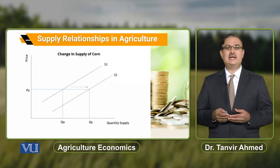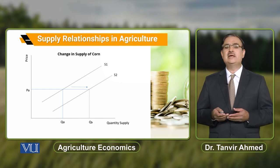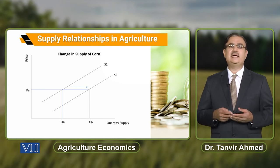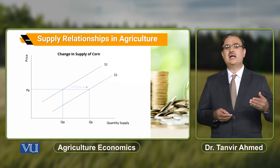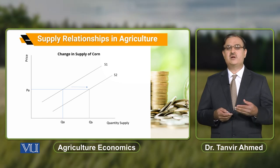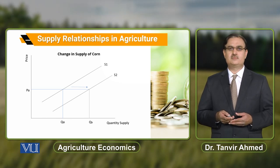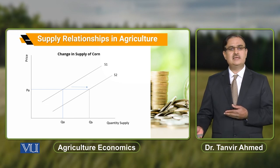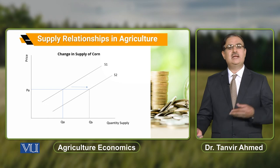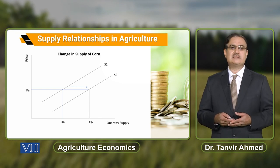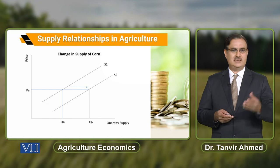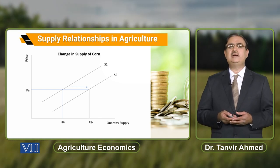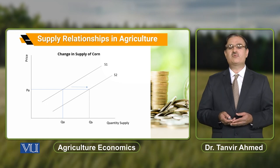So when we talk about increase in quantity supplied, that refers to movement along the supply curve. When we talk about increase in supply, our supply curve will shift from one position to another. If it shifts rightward, there is an increase in supply; if it shifts leftward, there is a decrease in supply. The arrow here indicates an increase in supply of corn.